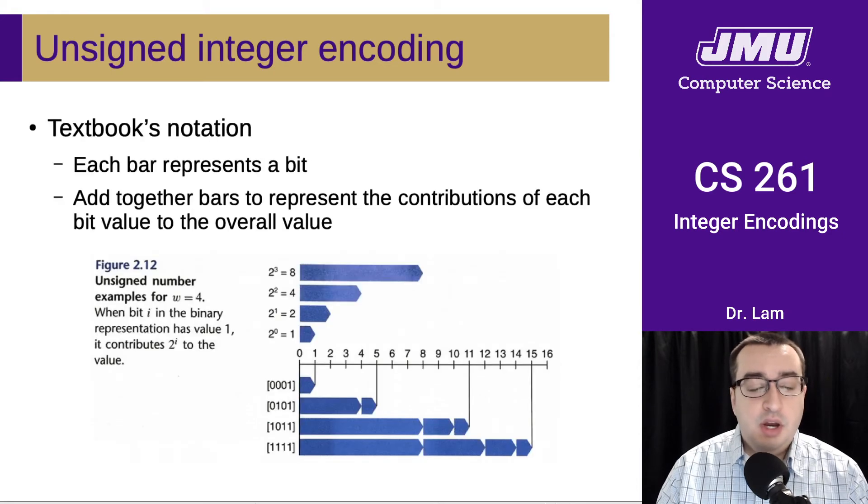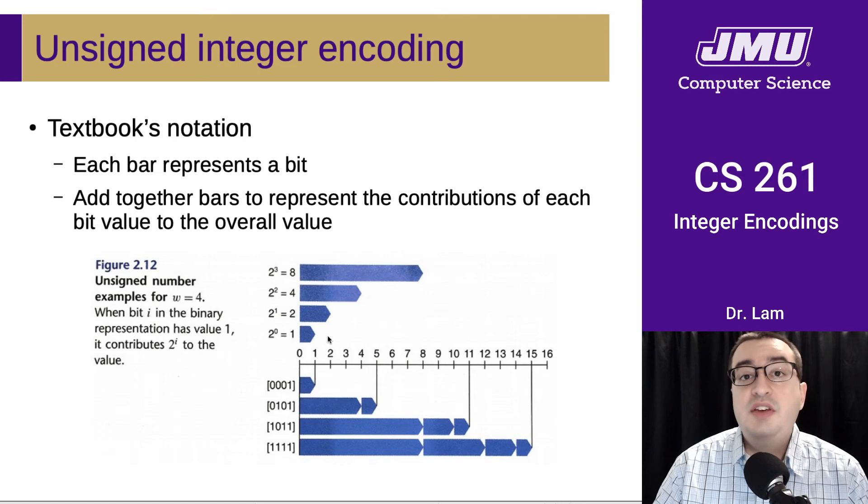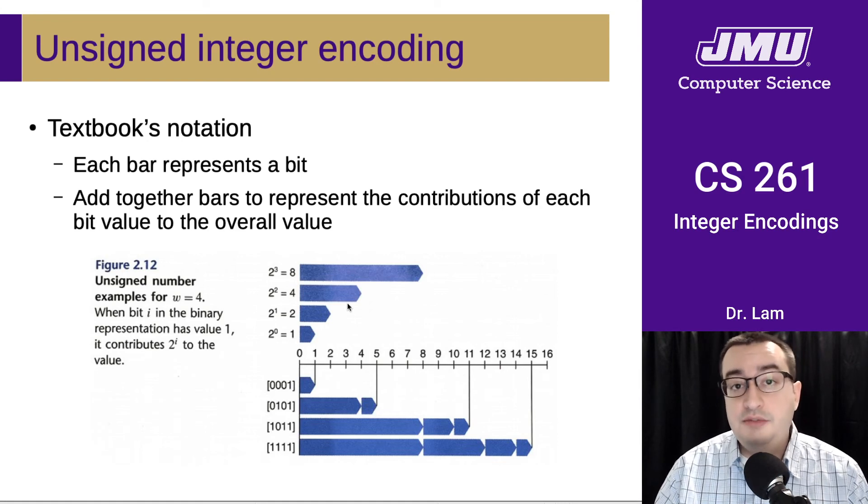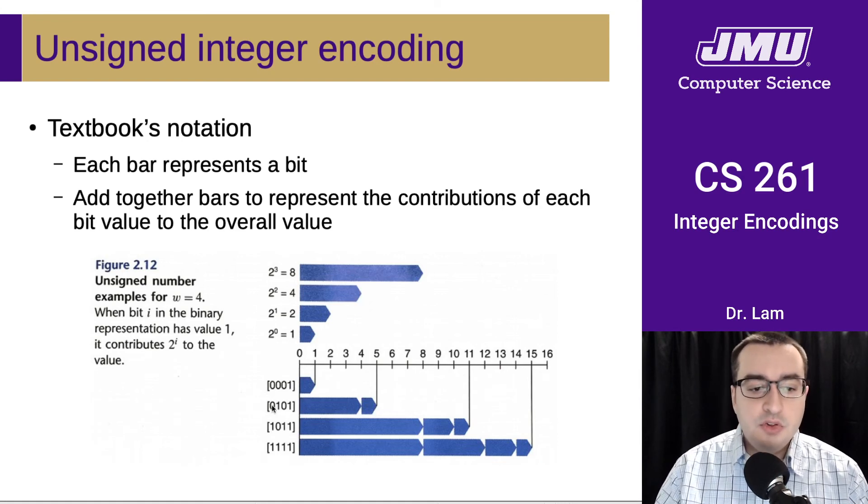And so the way that the textbook demonstrates this or illustrates this is kind of interesting. So they represent this graphically, so each bit in the representation is given a particular bar length, and you'll notice that each one of these bars is twice the length of the bar before it. So this is the value that each of those bits contributes to the overall value. So the first bit contributes a 1, the second bit contributes a 2, and this is going from least significant to most significant, or from right to left if you're writing it in the normal format.